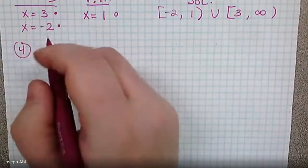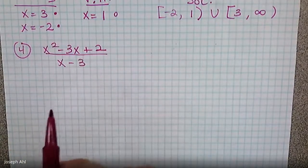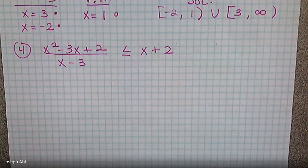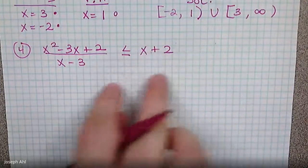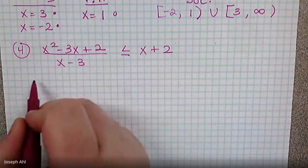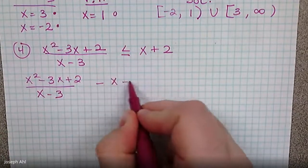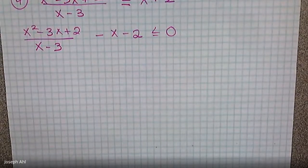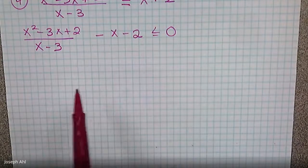One more example: x squared minus three x plus two all over x minus three, less than or equal to x plus two. This is the most complex setup since it's not set to zero. Move all terms to one side: subtract x and subtract two from both sides to get x squared minus three x plus two over x minus three, minus x minus two, less than or equal to zero. Now get a common denominator to combine into one fraction.